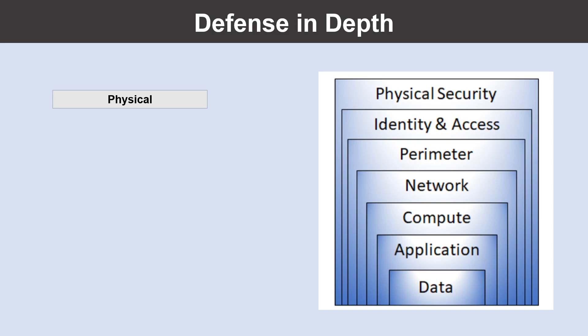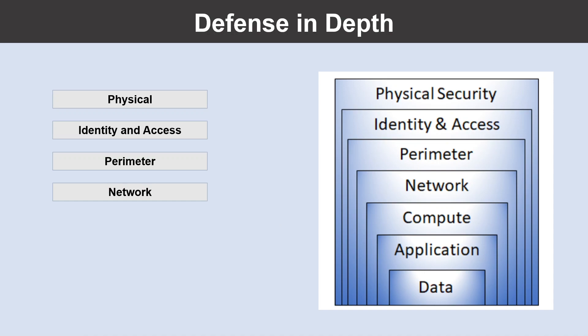The first one is the physical layer. Physical security provides limiting access to a data center to only authorized personnel. Identity and access security controls access to infrastructure and change control. Perimeter security includes DDoS protection to filter large-scale attacks before they can cause a denial of service for users. Network security can limit communication between resources using segmentation and access control. The compute layer can secure access to virtual machines, either on premises or in the cloud, by closing certain ports.